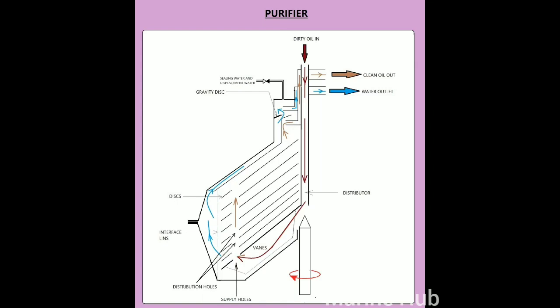Separation and clarification takes place between the discs. Water and sludge moving radially outwards pass along the undersurface of the discs, and the purified oil moving radially inwards passes over the upper surface of the discs. Water and light sludge particles are discharged at the water outlet. There is a sludge discharge cycle which will empty the bowl at designated intervals.